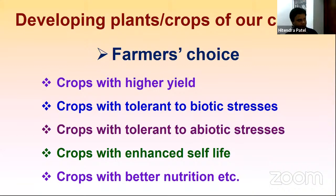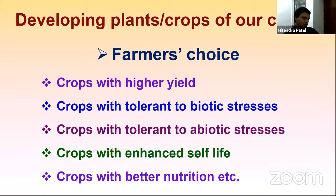The second choice is tolerance to biotic stresses. What farmers prefer are crops which are resistant to insect pests or diseases, so that they have to use less pesticides and agrochemicals to control the disease, and again they can save their input cost. Then, what farmers also need is tolerance to abiotic stresses — crops which are tolerant to flooding, cyclone, or drought conditions, so that they can save their crop.